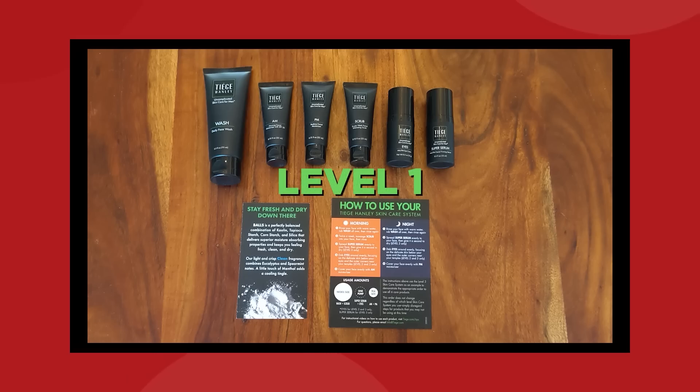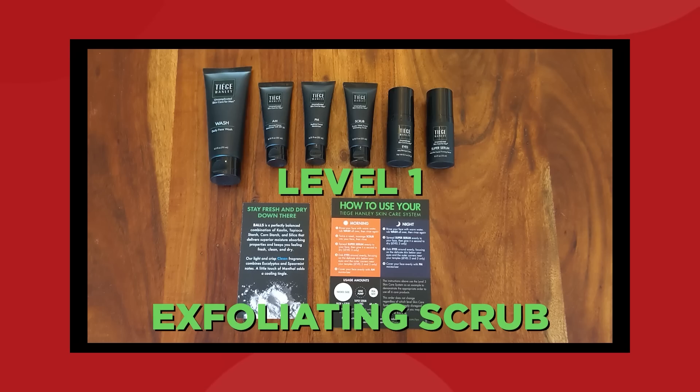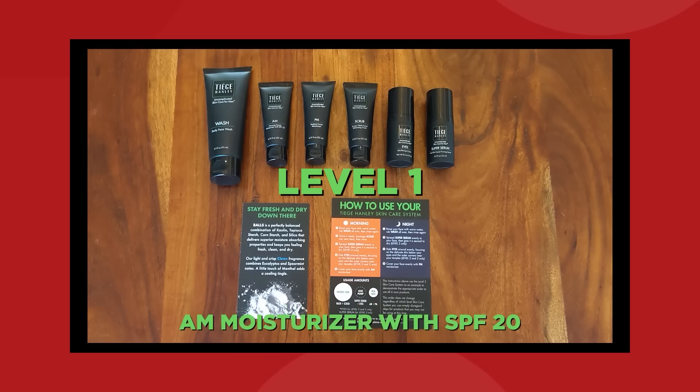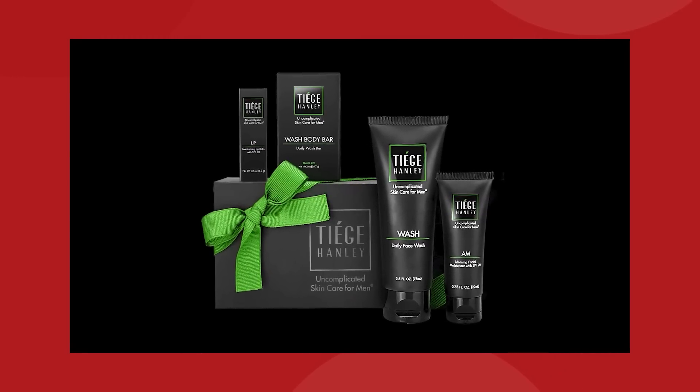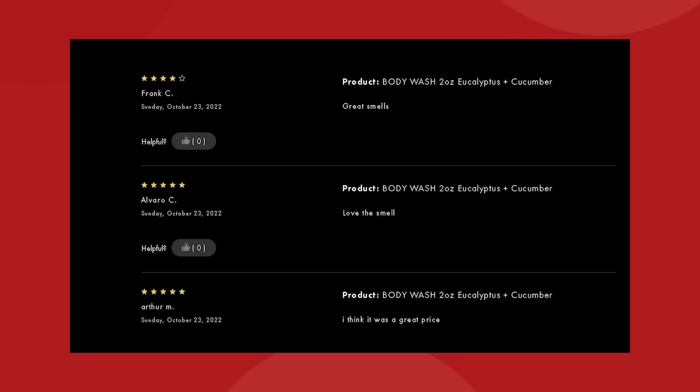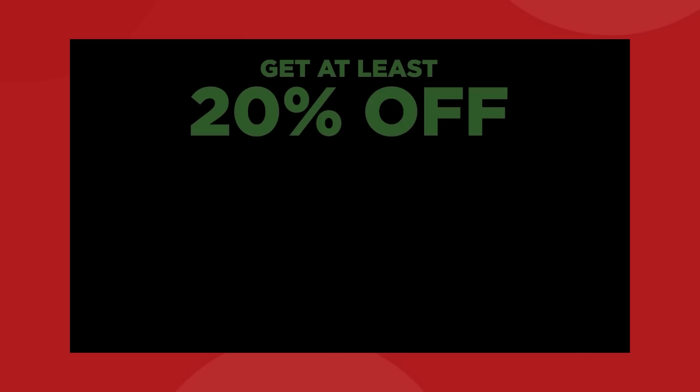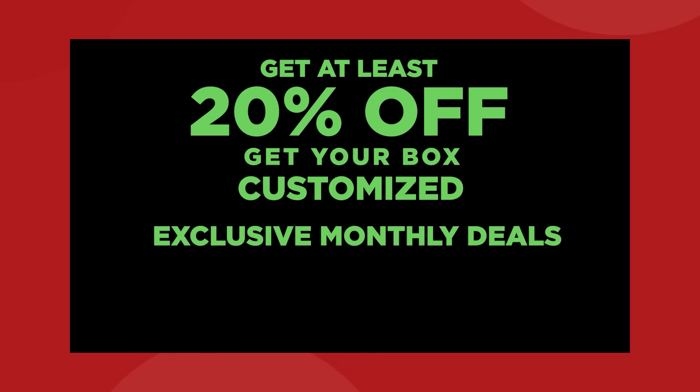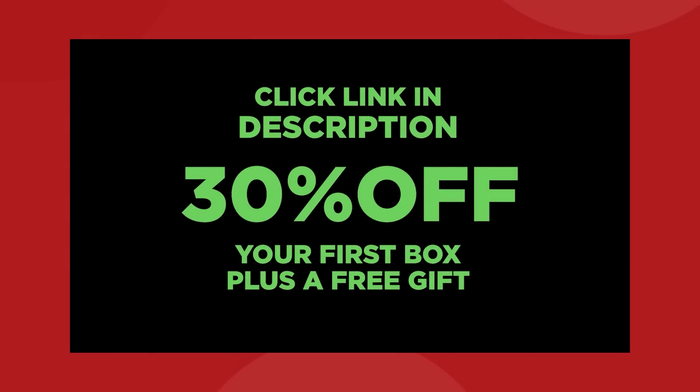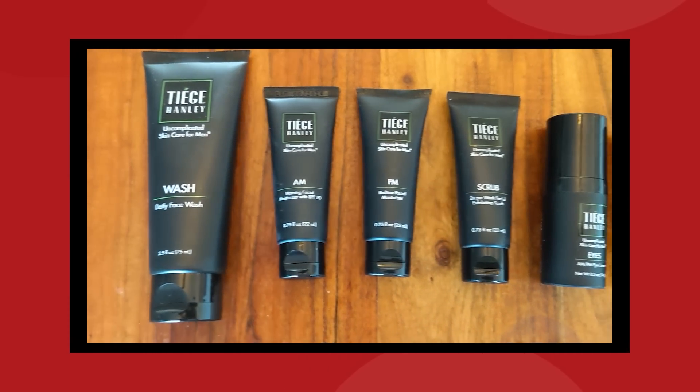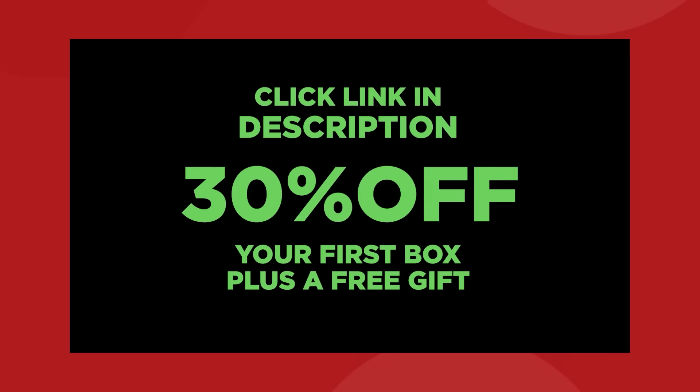The level 1 system comes with all the basics, including a daily face wash, a two times per week exfoliating scrub, a morning moisturizer with SPF 20, and a nighttime moisturizer. Even if you're not ready to start your own routine, the level 1 system makes a great gift for the holidays coming up. They have over 5,000 five-star reviews on their website from customers. Members of Teej Hanley get 20% off the retail price, the ability to customize your box, exclusive monthly deals, pause or cancel at any time, and free US shipping. Because Teej Hanley is sponsoring this video, they are offering our viewers a great deal. Just click the link in the description box and you will get 30% off your first box plus a free gift.